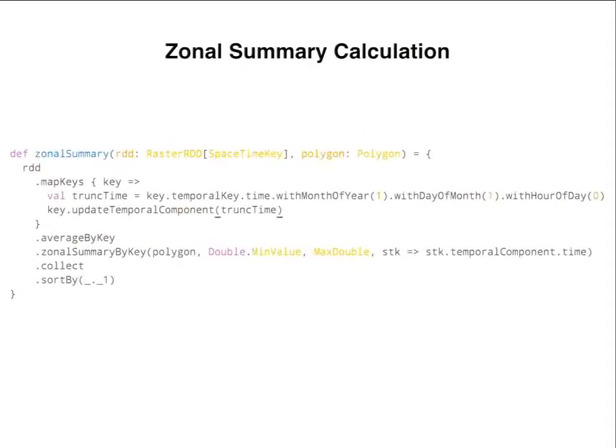This is the actual code describing this calculation. We can identify the stages in it and see how it forms a pipeline. Perhaps somebody who is actually a climate scientist can come and make a useful calculation, maybe using two layers, and come up with an insightful time series.